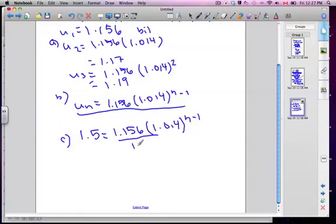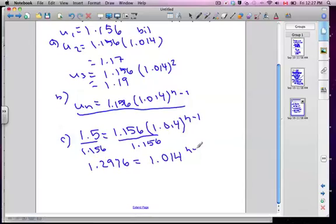Let's get rid of that 1.156. So I'm going to divide both sides by 1.156, and I get 1.2976. I'm going to keep all those decimals because the significant figures have to be for the final answer. So I've got to keep all my accuracy for a little while yet. Equals 1.014 to the N minus 1.